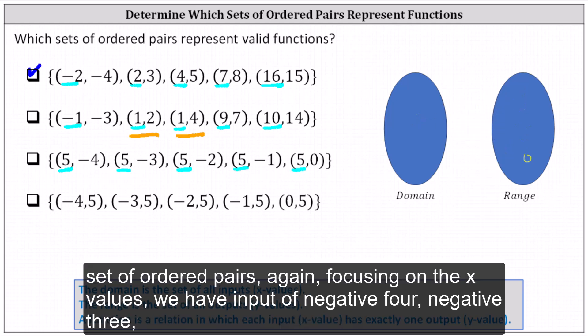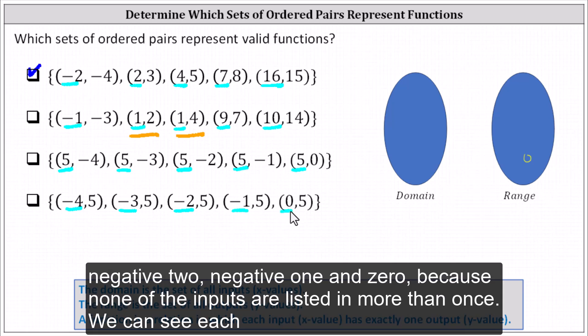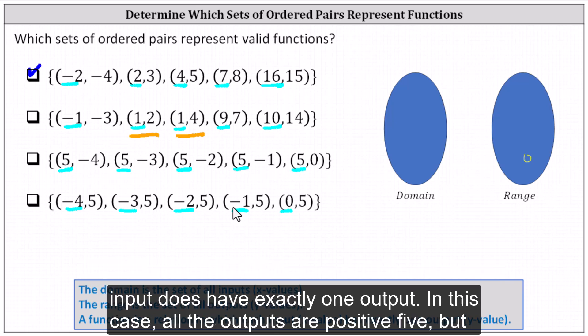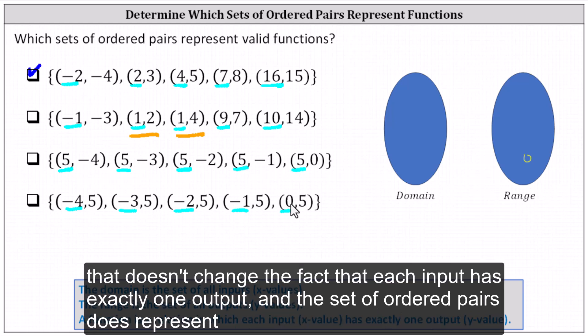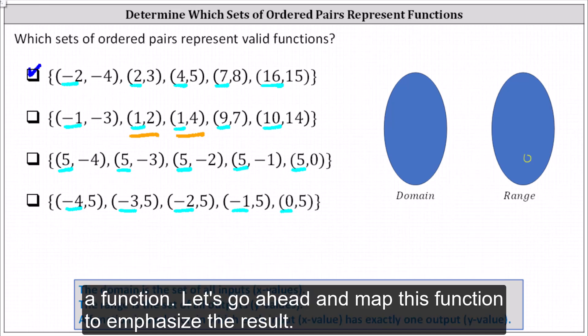For the last set of ordered pairs, again focusing on the x values, we have inputs of negative four, negative three, negative two, negative one, and zero. Because none of the inputs are listed more than once, each input does have exactly one output. In this case, all the outputs are positive five, but that doesn't change the fact that each input has exactly one output, and the set of ordered pairs does represent a function.